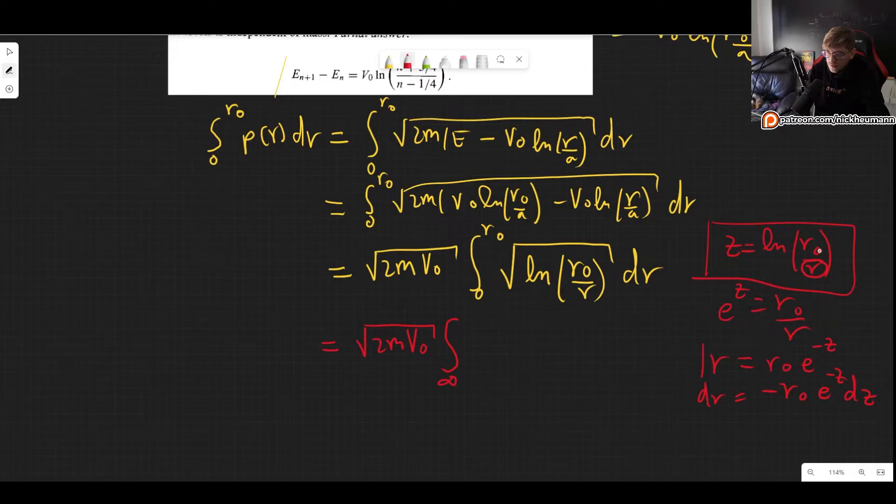And in the other limit we have R equals R0. So that means that right here we have this would be 1. So we get the natural log of 1 which is 0. So we integrate from infinity to 0.